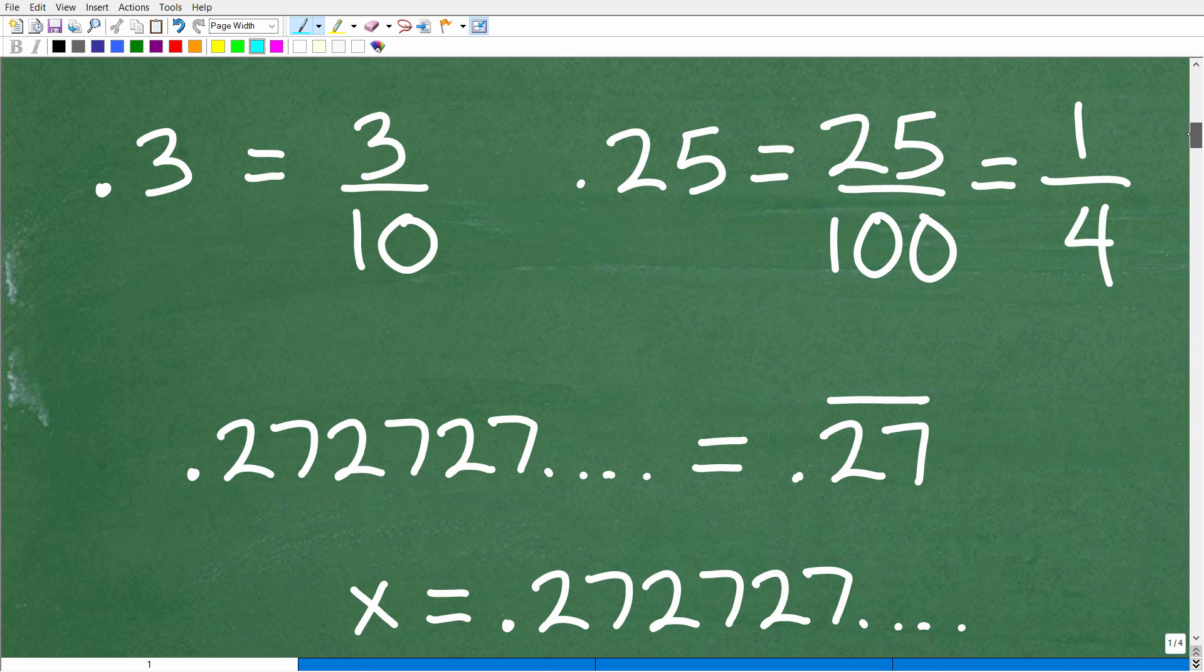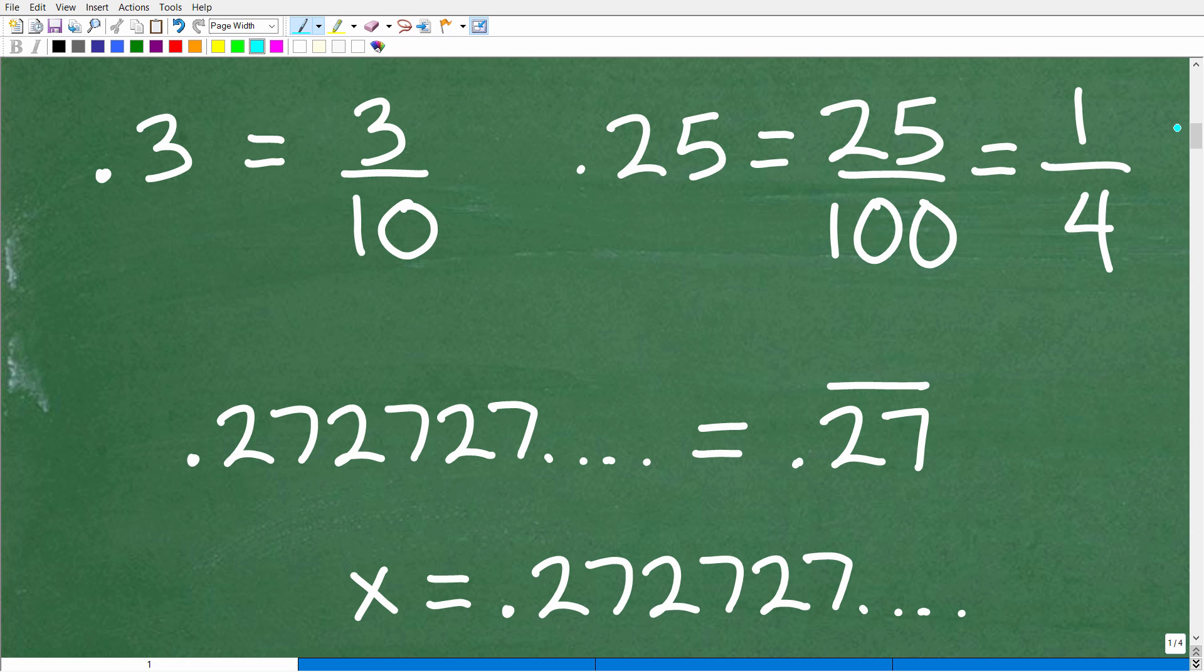But let's just quickly review the reality that some decimals can be expressed as fractions. Let's take a look at a few easy examples. So here is 0.3. If I say this using place value, this is in a tenths place. So the equivalent fraction is 3 tenths. So 0.3 is equal to the fraction 3 over 10. Pretty simple example.